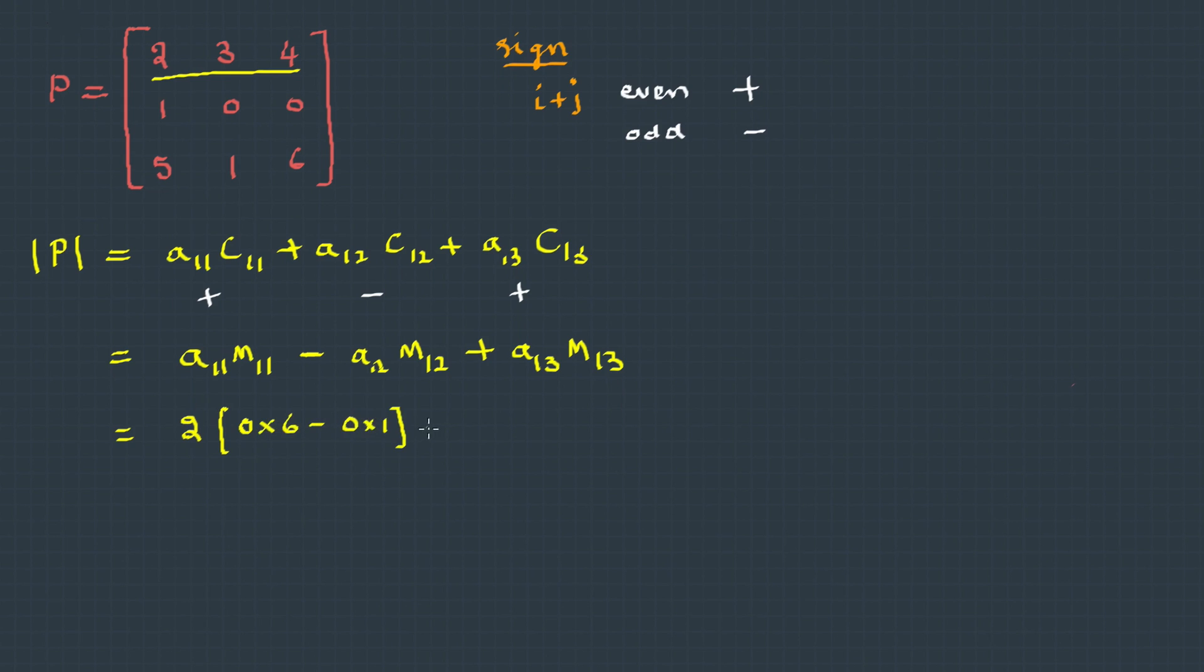On simplification this becomes, it gives the answer -14. If you carefully observe, this was slightly lengthier. We could have done this faster if at all we have picked up this particular row.